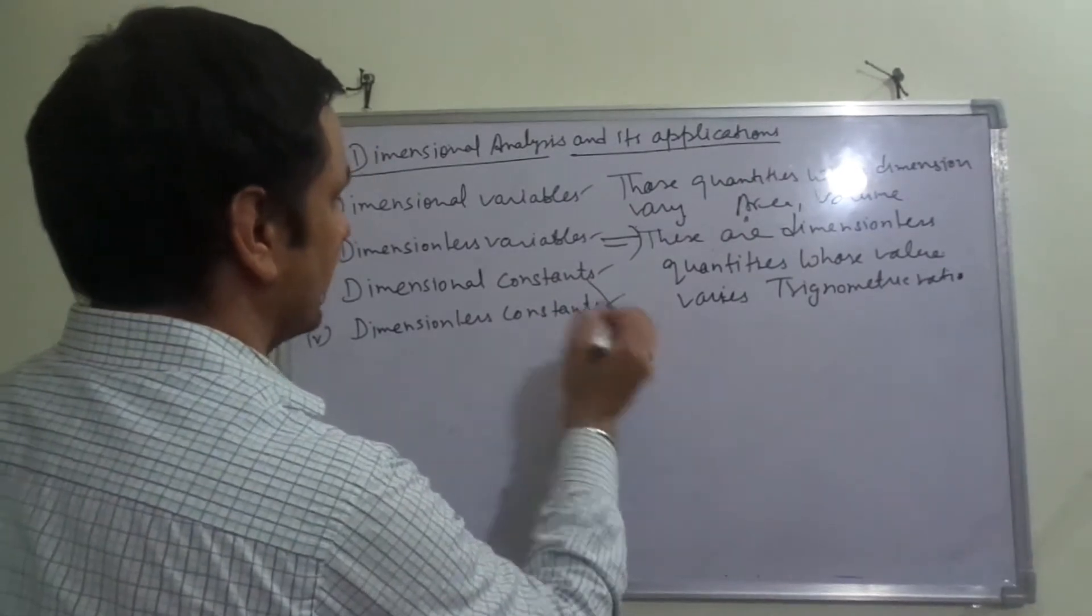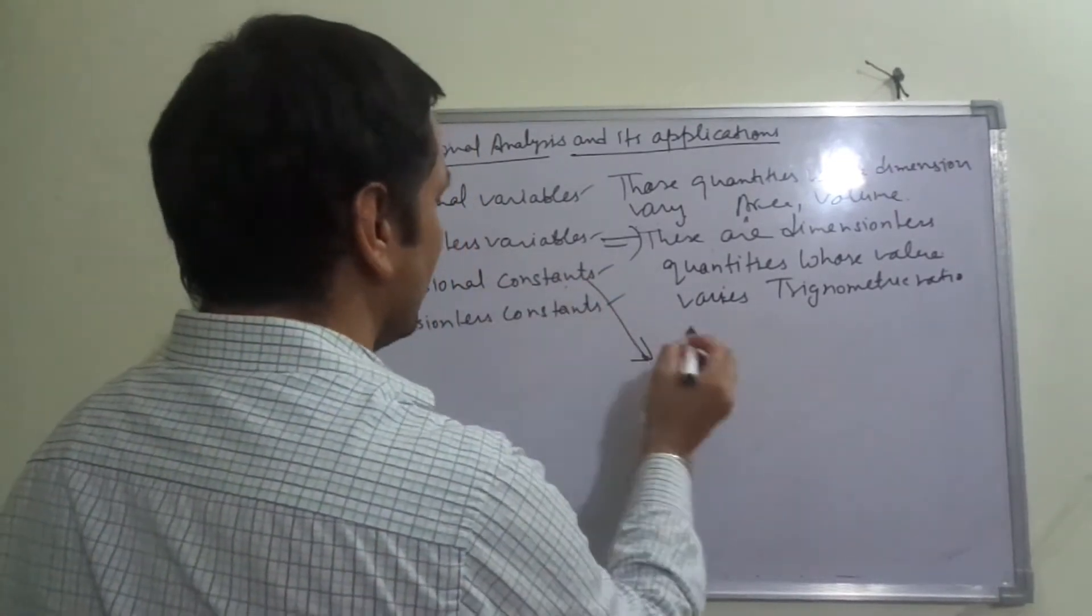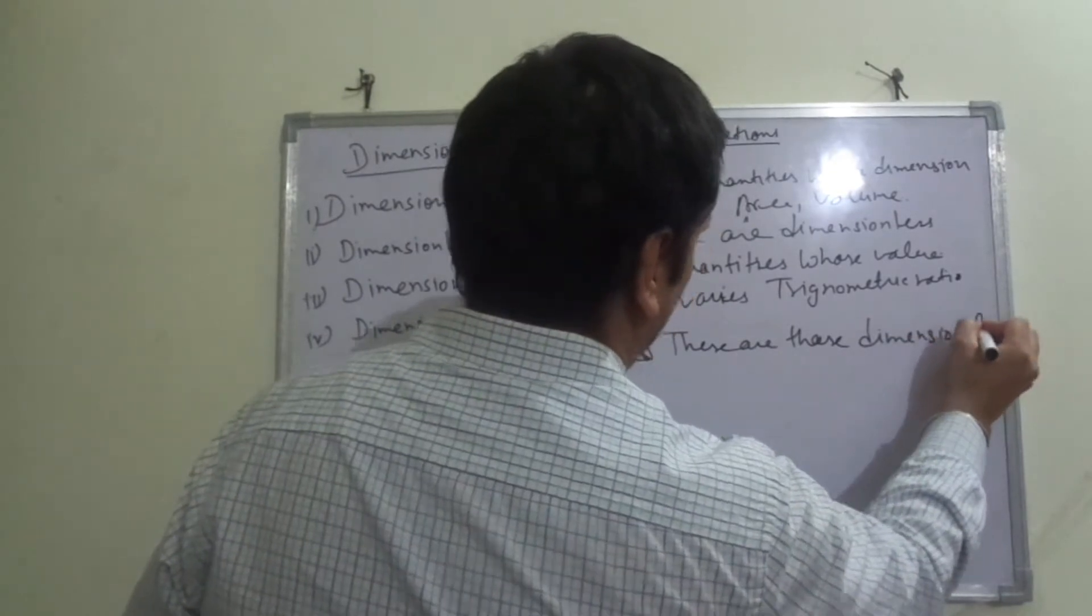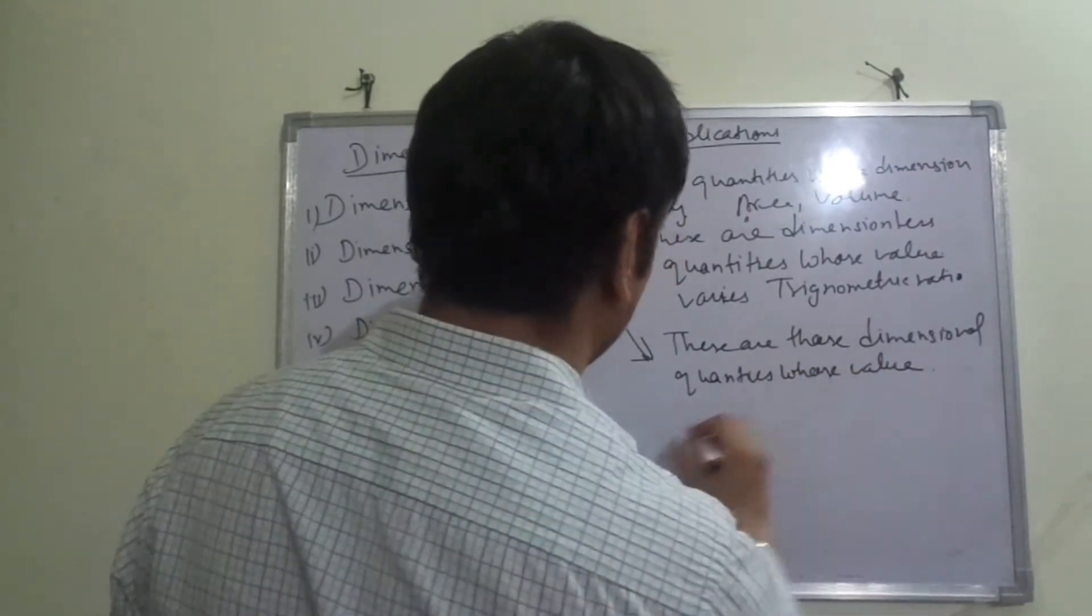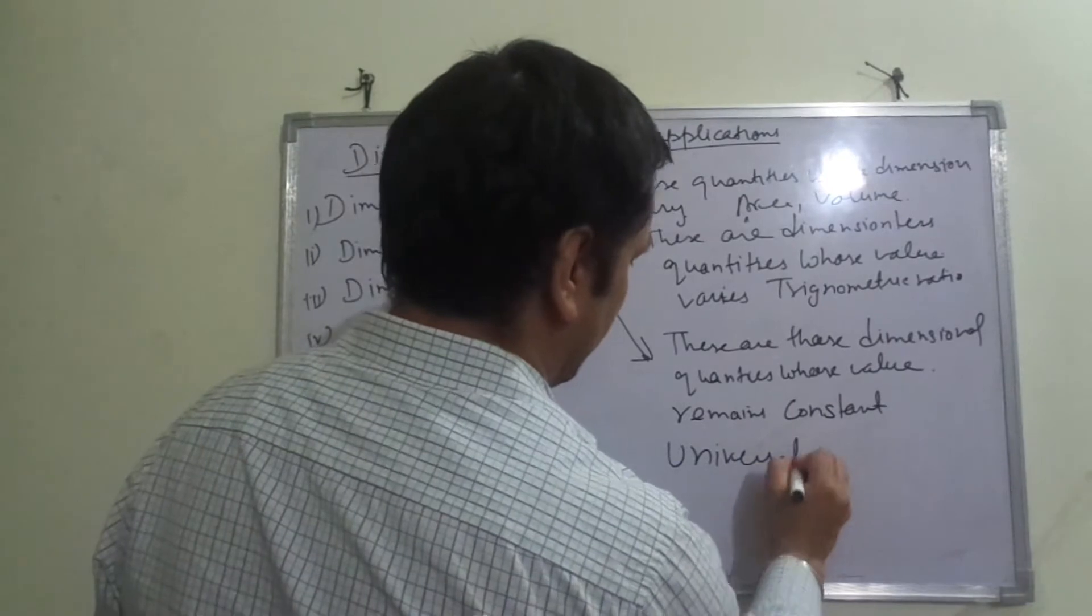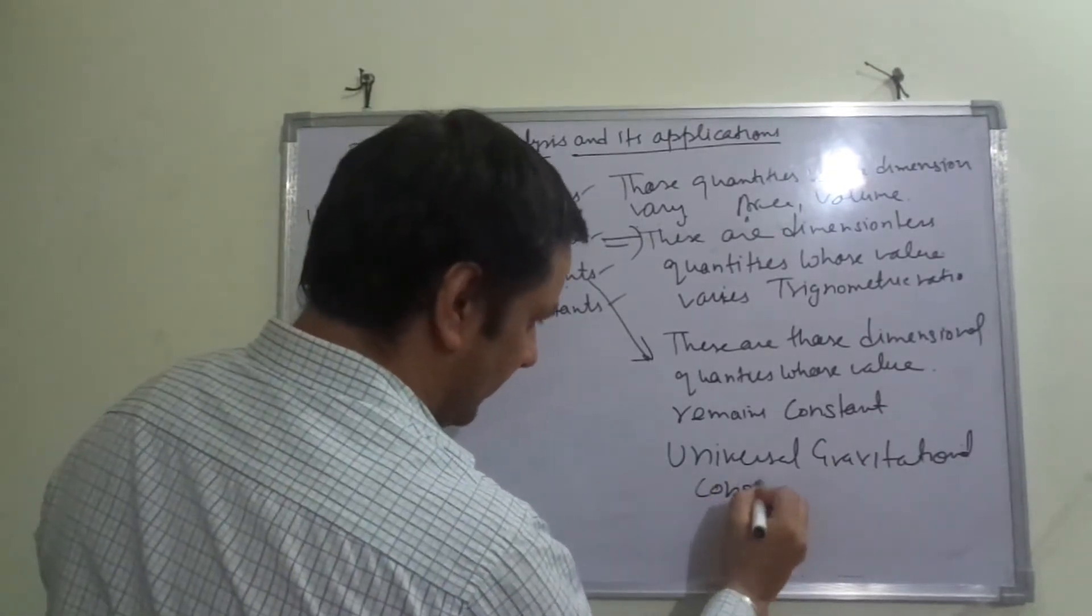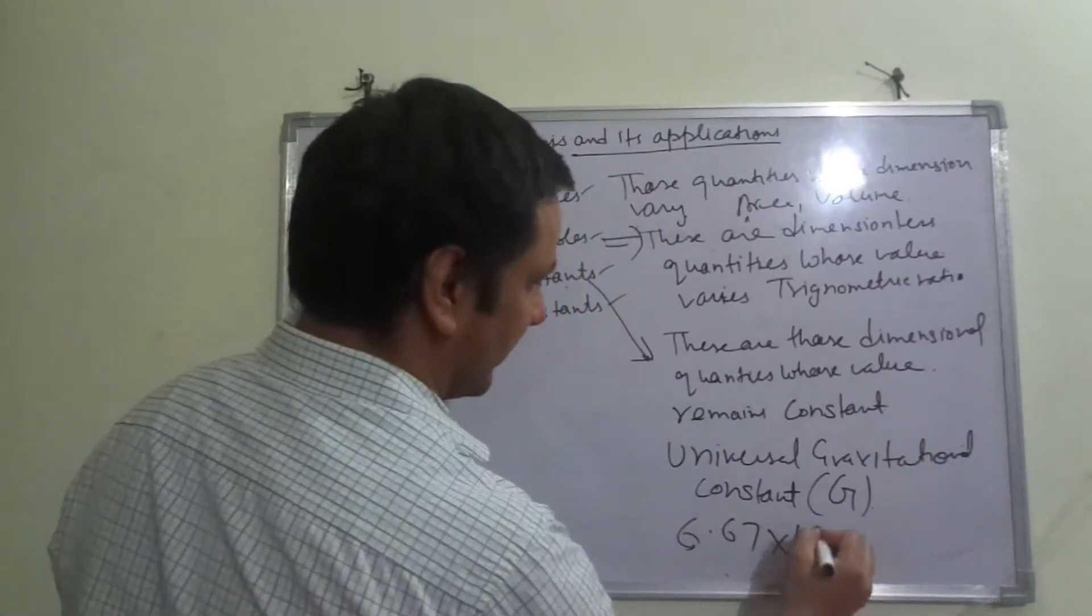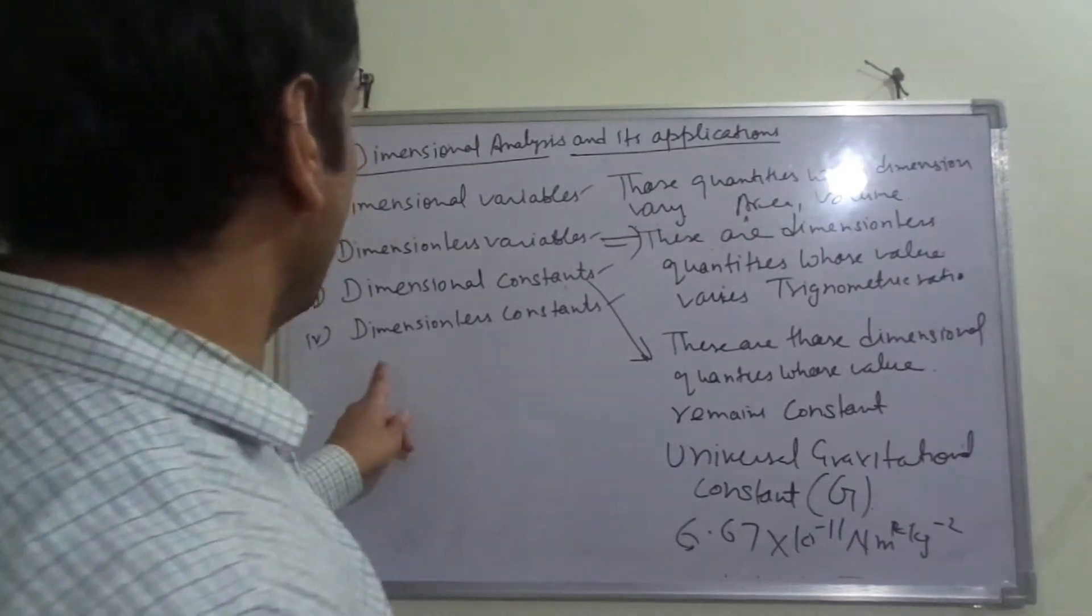Dimensional constants - these are those quantities, dimensional quantities whose value remains constant. Now dimensional less constants.